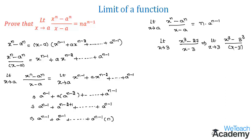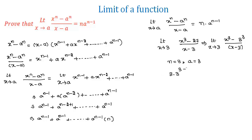Now let us compare this with the formula. We get the n value as 3 and the a value as 3. The formula is n into a power n minus 1, so this comes as 3 into 3 power 3 minus 1, which is 3 into 3 squared, that is 3 into 9. By multiplying 3 and 9 we get 27.